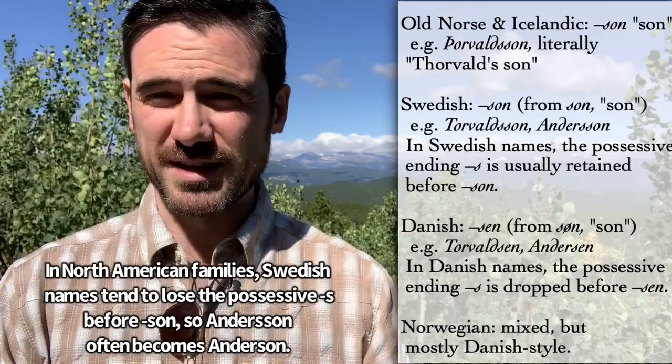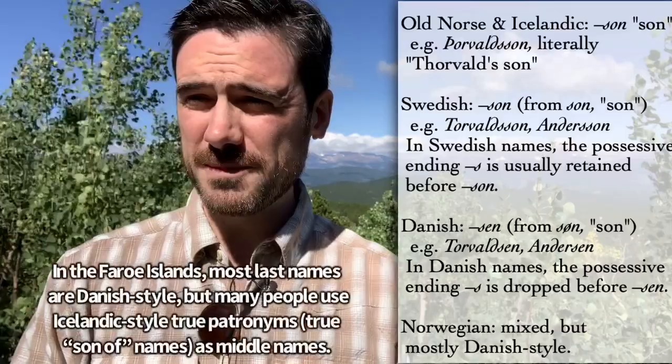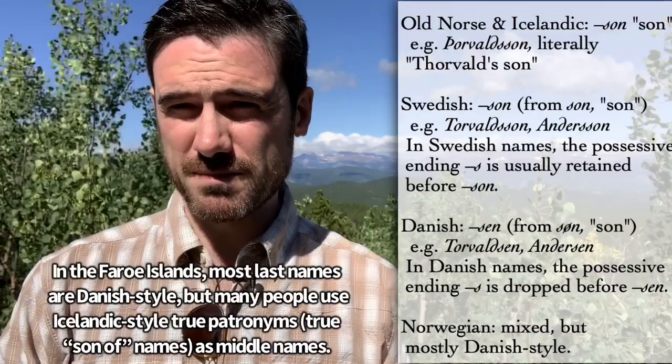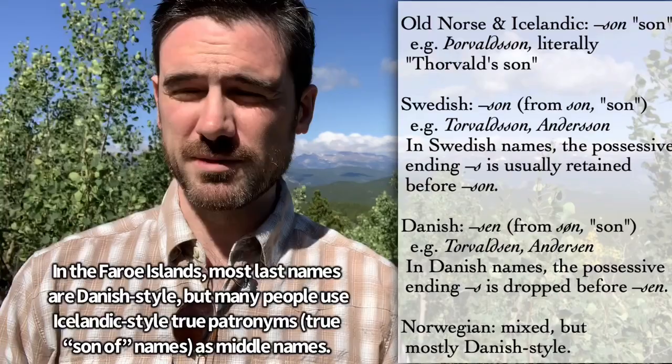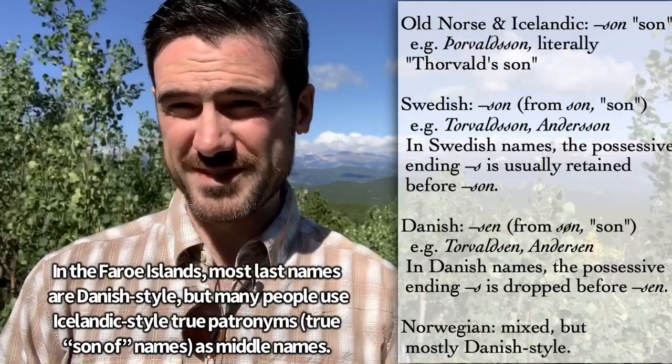So any unstressed syllable becoming E means that 'son' in a compound word such as Andersson becomes -sen. In Norway, you end up getting a mix of the two, because in most native Norwegian dialects — which are somewhat approximately reflected in the written language Nynorsk — those vowels do remain the same, just like in Swedish. You would expect -son, and you do get some Norwegian last names ending in -son, but you also have a strong influence from Danish on Norwegian, and that especially occurs in the cities, where you're very likely to find last names in S-E-N, just like in Denmark.